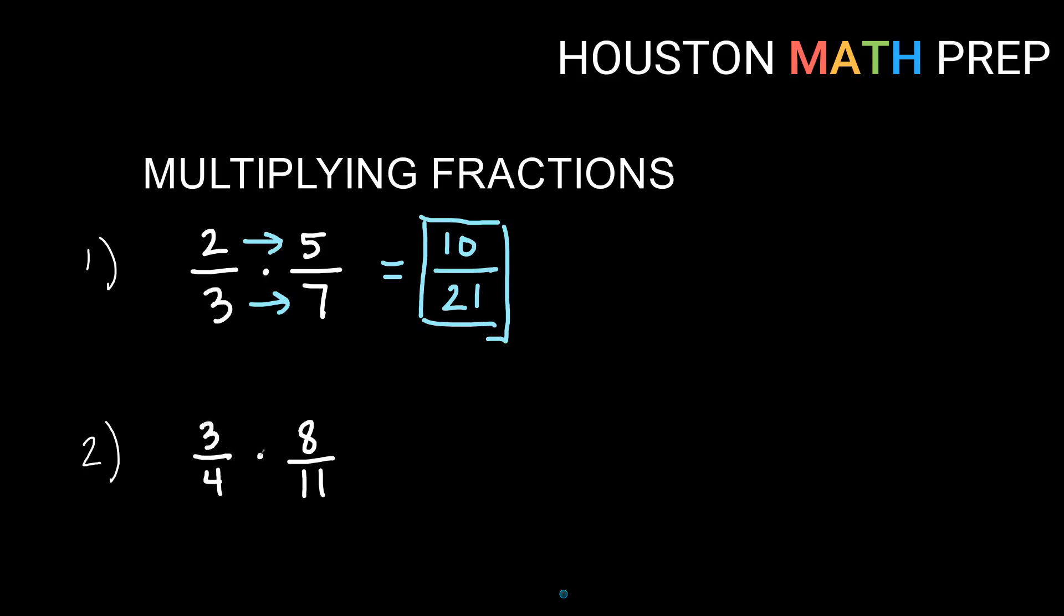For the second one, 3 over 4 times 8 over 11, again we go straight across. 3 times 8 will give us 24. On the bottom 4 times 11 gives us 44. Now what you may notice is that these are divisible by some common things. So these are both divisible by 4, so I could go ahead and divide each part by 4. We're just reducing it to the smallest terms, lowest terms. So that would give us 6 on top and 11 on the bottom, and that would be our answer.